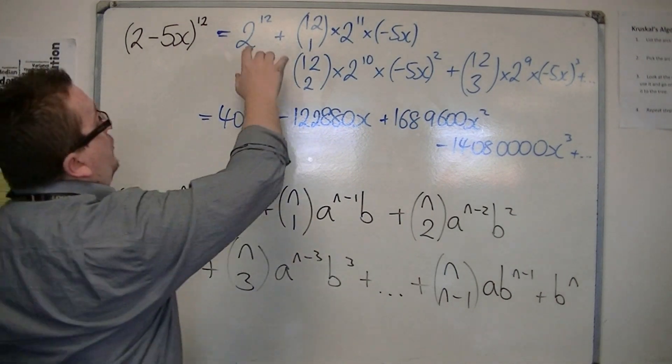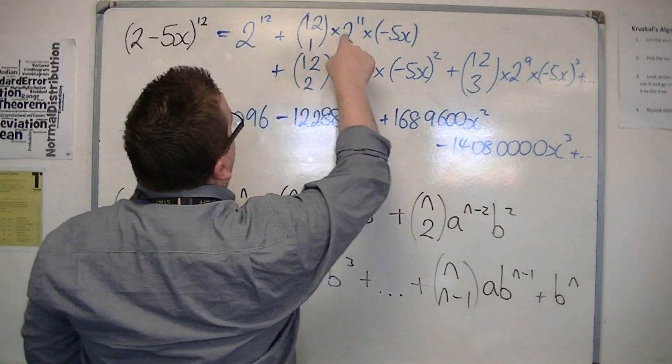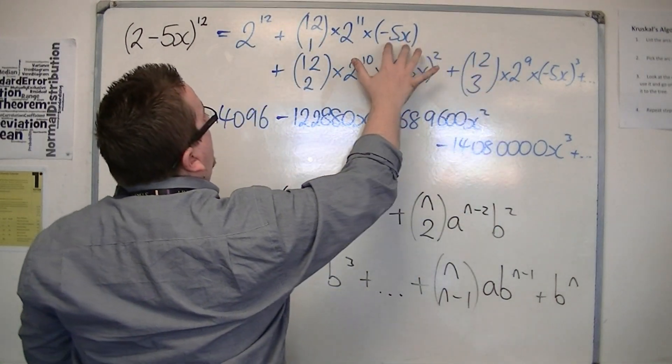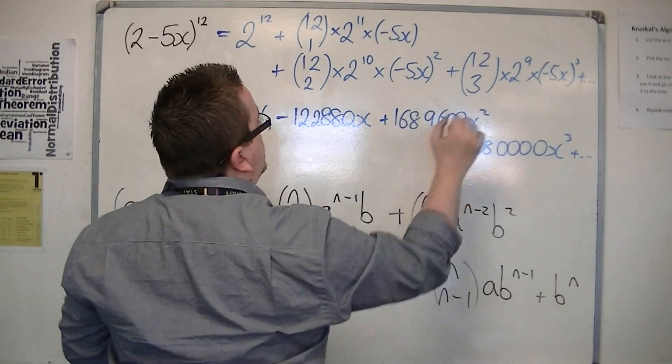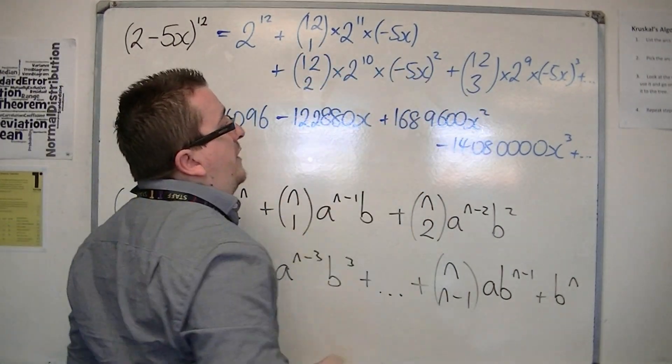And knowing how the 2's, in this case, are decreasing in power each time. The minus 5x is increasing in power each time. And we're using the NCR button at each stage.